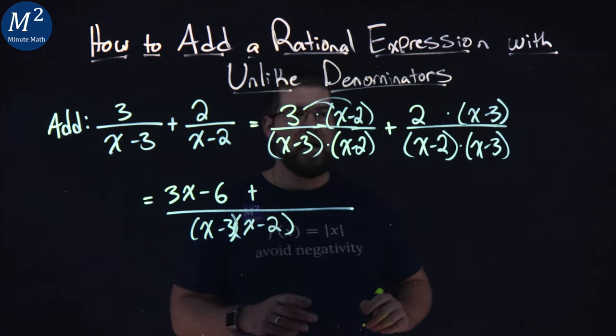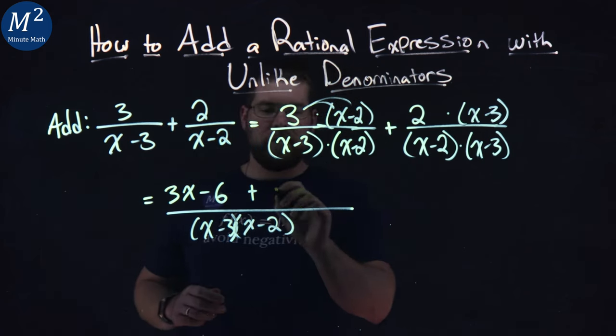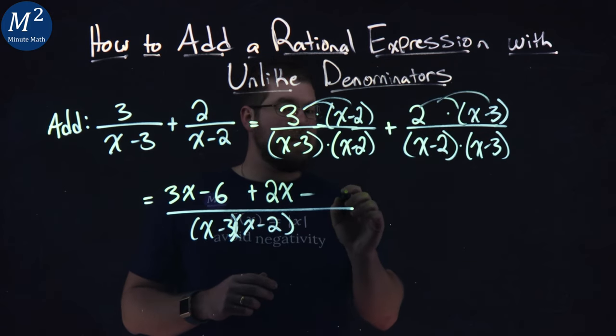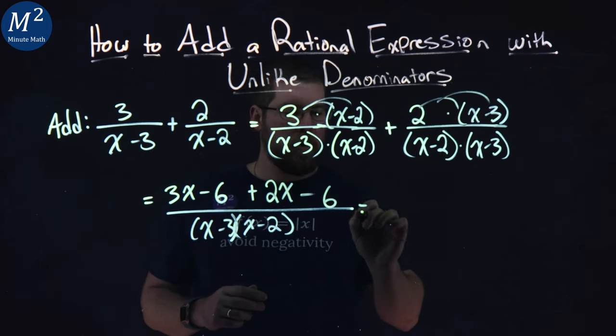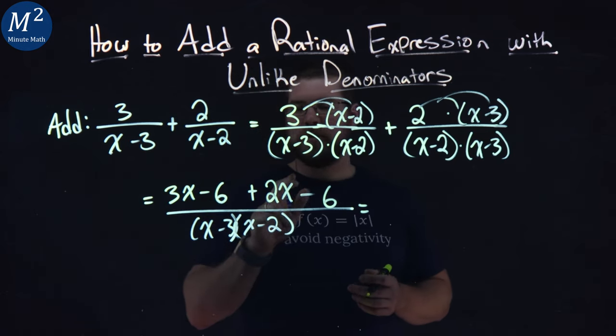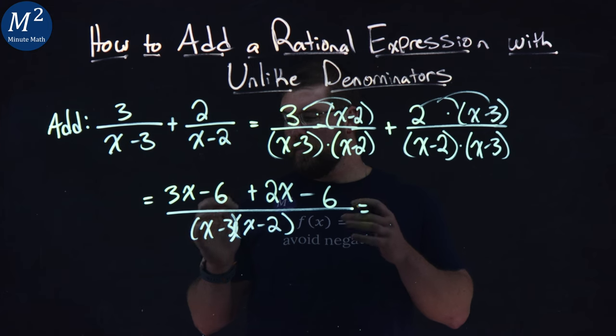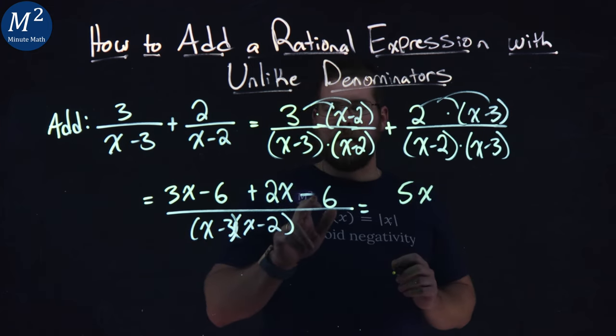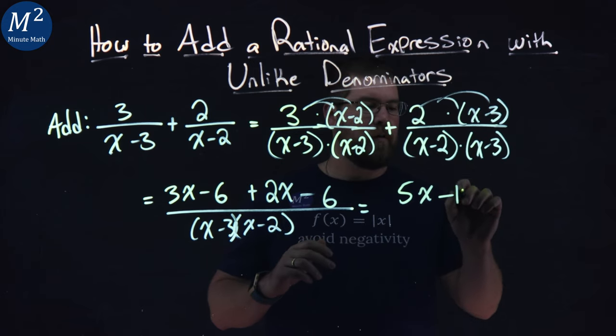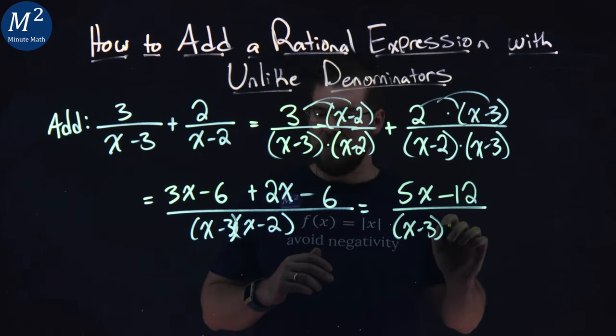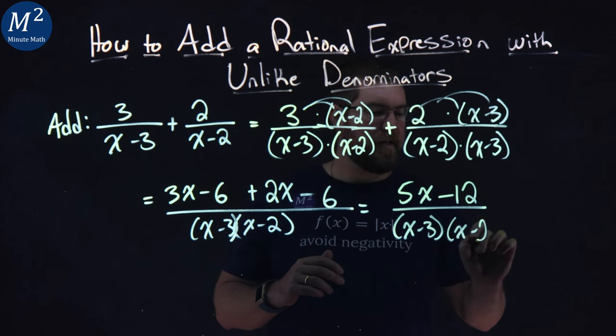Second one here, multiply 2 times x is a 2x, and 2 times minus 3 is a minus 6. All right. See if we can combine our like terms here. Numerator, 3x and a 2x comes out to be a good old 5x. Minus 6, minus 6 here is a minus 12 over an x minus 3 and an x minus 2.